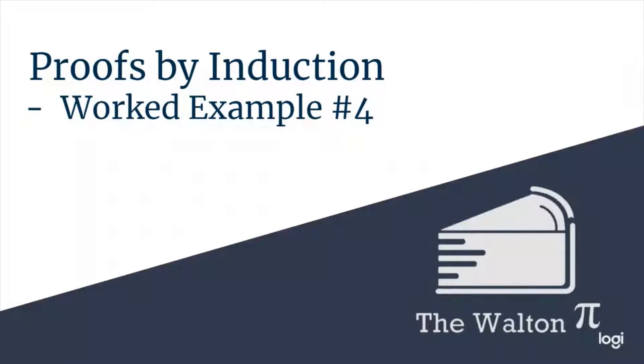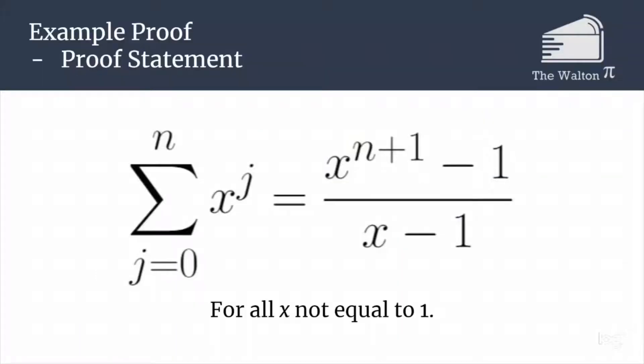The example proof we are going to go through today is proving that for every x not equal to 1 in the real numbers, the sum from j equals 0 to n of x raised to the j is equal to x to the n plus 1 minus 1, divided by x minus 1.